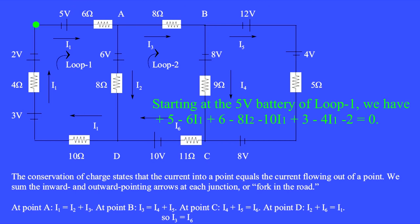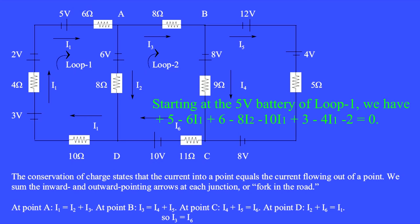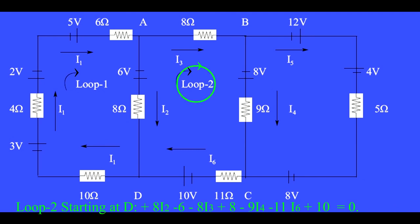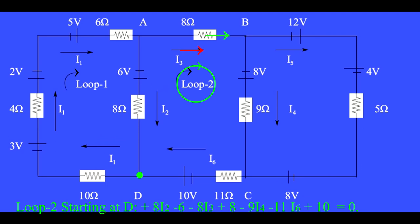Starting at the 5 volt battery of loop 1, we have plus 5, minus 6I1, plus 6, minus 8I2, minus 10I1, plus 3, minus 4I1, minus 2 equals 0. Zooming in on loop 2 and writing the conservation of energy starting at point D: first is the 8 ohm resistor, where the path is upward and the current I2 is downward, so we write plus 8I2 as the voltage change. Next we go the wrong way through the battery, so we write minus 6, and then minus 8I3, plus 8, minus 9I4, minus 11I6, plus 10 equals 0.